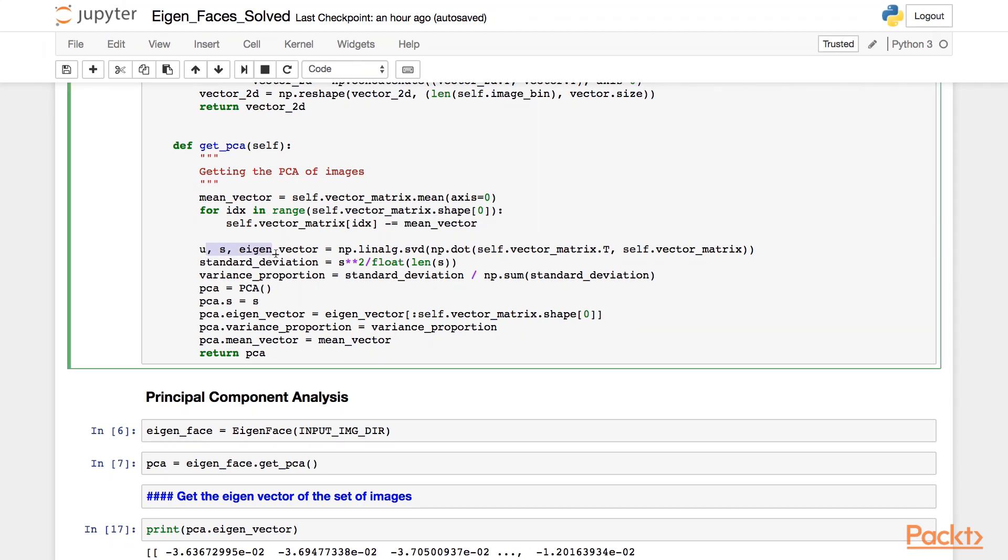This is followed by performing single value decomposition, which is used for factorizing the vector matrix, which gives us three values U, S, and V, where S is the standard deviation and V is the eigenvector.